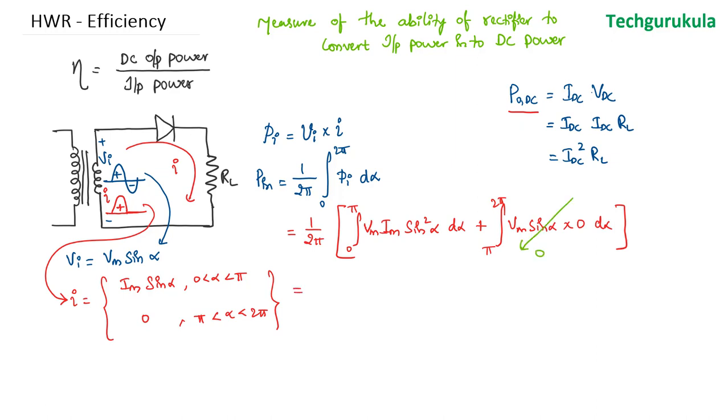So let's find the diode, which is 1 over 2π. Now V_m is nothing but I_m times R_f plus R_L. So let me write that down here. We know that V_m in the first half cycle is given by I_m times the forward resistance of the diode plus the load resistor. So let's take that out. We will get I_m square times R_f plus R_L.